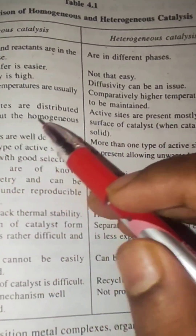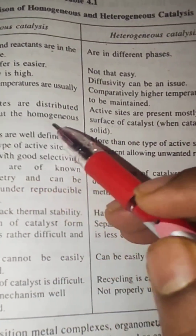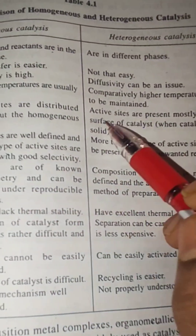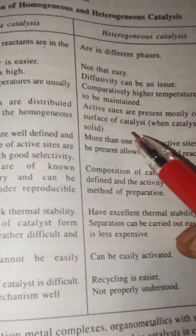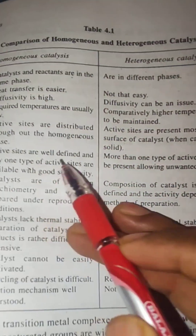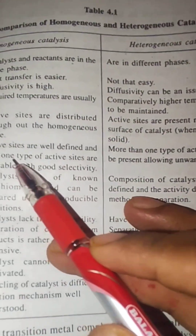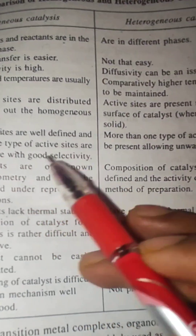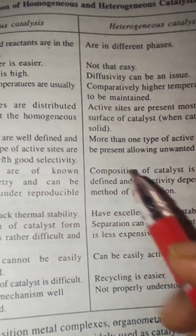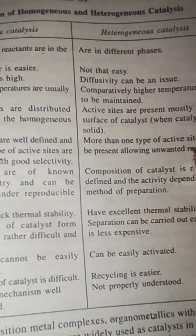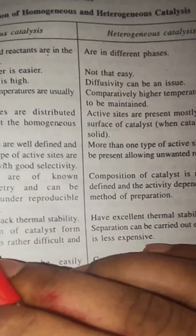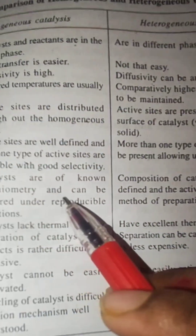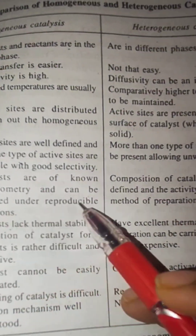Active sites are distributed throughout the homogeneous phase, whereas in heterogeneous catalysis active sites are present mostly on the surface of the catalyst. Active sites in heterogeneous catalysis are very well defined and only one type of active site is available, giving good selectivity. In homogeneous catalysis, more than one type of active site may be present, allowing unwanted reactions.